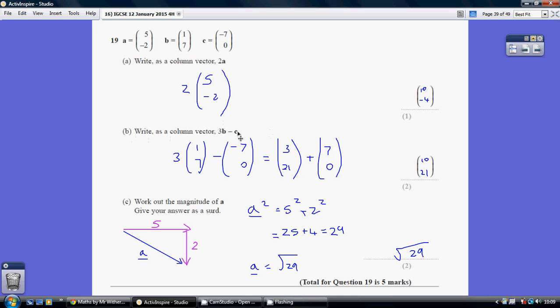Similarly with part B, again, don't get phased by it being a bit different, just follow what it's asking you to do. 3 lots of B and then we take away C.